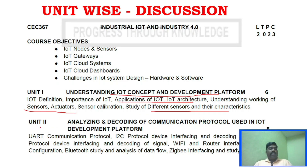Unit 2 is about analyzing and decoding communication protocols used in the IoT development platform. There are many protocols, including I2C and SPI protocols — these are the interface protocols to understand and decode.